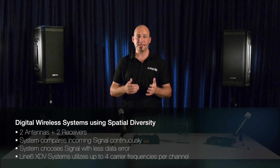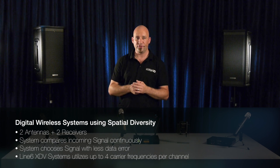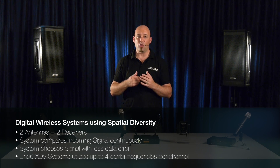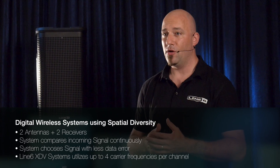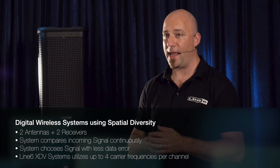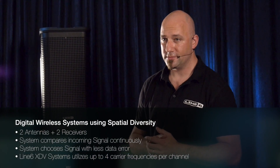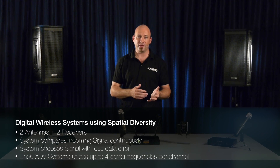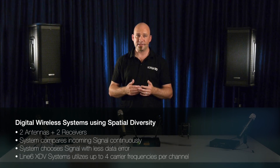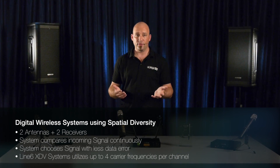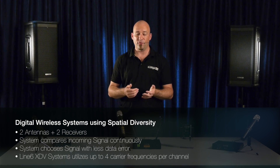The Line 6 XDV systems utilize four different RF frequencies that are transmitted for each single audio channel. Only if there are errors or loss of signal on all four RF frequencies within a single transmission packet will an XDV system mute. The result of the spatial diversity, frequency diversity and data coding properties of digital wireless is that the only audio passed through the receiver is the intended audio from the transmitter.